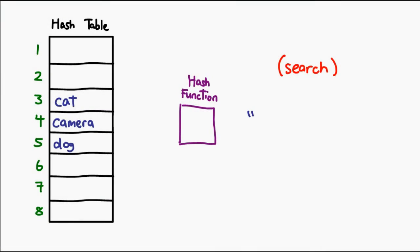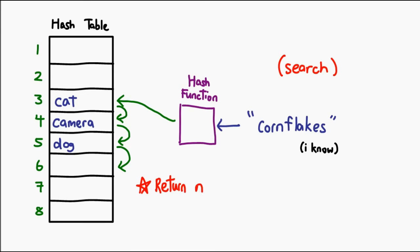What happens when you search for an item that is missing? Let's try to search for cornflakes. The hash function points you to position 3 and you say, nope, that is not what I'm looking for. You try to go down to position 4, that's not what I'm looking for either. You go down to position 5, nope, that's not it. You go down to position 6 and you say, hey, that's an empty slot. Only then can you conclude that the item is not found.